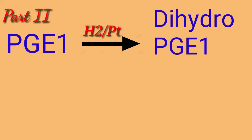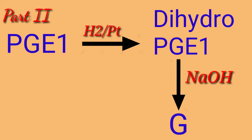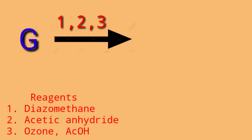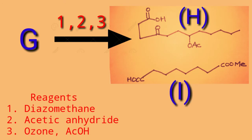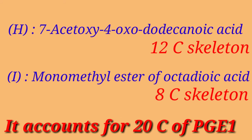When PGE1 undergoes catalytic reduction it produces dihydro-PGE1, which was treated with hydroxylamine to produce compound G. Compound G was further allowed to react with diazomethane, acetic anhydride, and ozone in the presence of acetic acid, yielding two compounds: compound H and compound I. Compound H is 7-acetoxyheptanoic acid and compound I is the monomethyl ester of octadioic acid. These two compounds account for 20 carbon atoms.